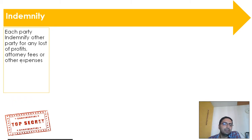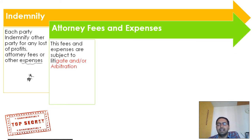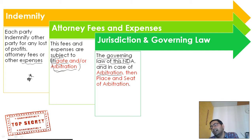The next clause is indemnification. Both parties will indemnify each other for any consequences arising from this NDA. This is a very protective clause and is mostly handled within the legal preview. Next is attorney fees and expenses, which defines who will bear the charges if either party goes to litigation or arbitration. Then there is jurisdiction and governing law — a very critical clause — which defines which governing law applies to this NDA, which arbitration law is applicable, and where the place and seat of arbitration will be.